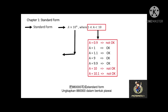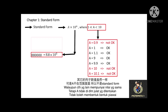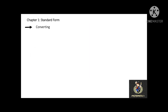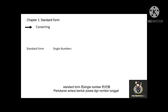Now I want to express 880,000 in standard form. The standard form is 8.8 × 10 to the power of 5. Other equivalent values such as 0.088 × 10 to the power of 7 or 88,000 × 10 to the power of 1 are non-standard forms because a is outside the required range of 1 ≤ a < 10.